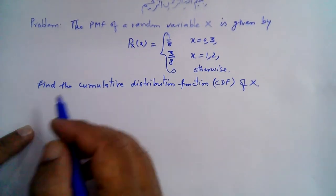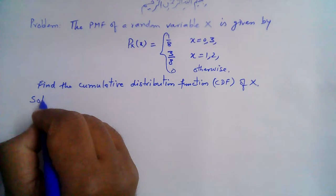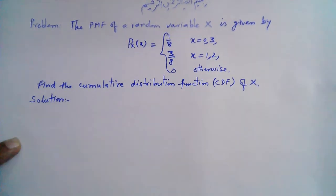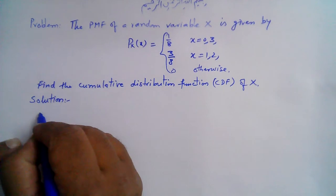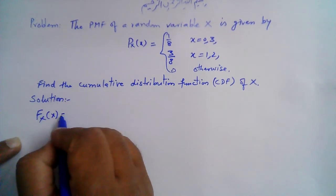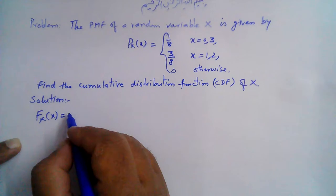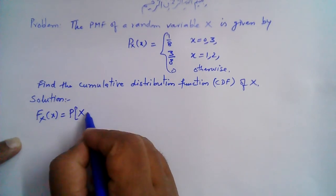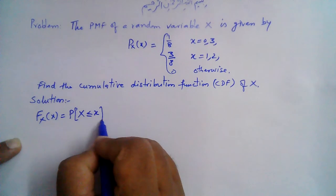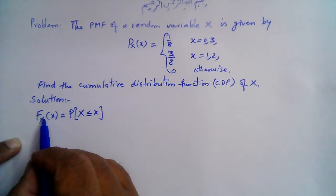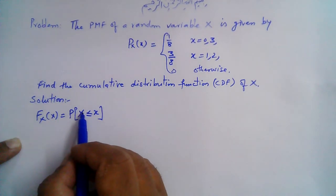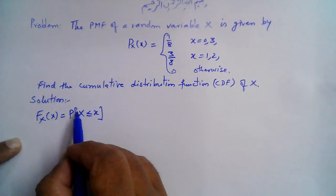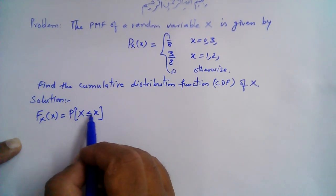We need to find the CDF from the given PMF. Since X is a discrete random variable, the CDF F_X(x) is defined as the probability that the random variable X is less than or equal to some value x.